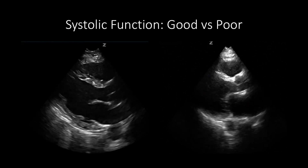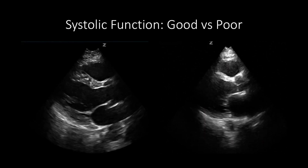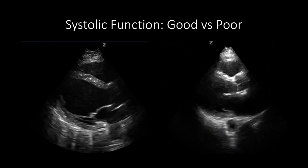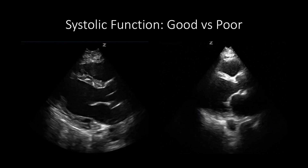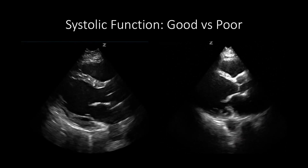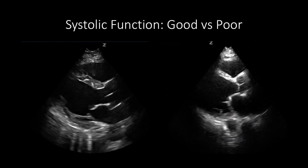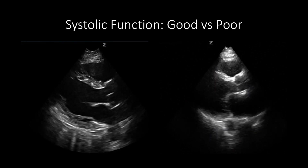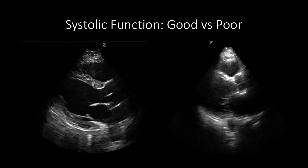Even though the systolic function can appear normal, the patient can still have acute heart failure. 50% of patients that have acute heart failure have normal systolic function. These patients are classified as having heart failure with preserved ejection fraction, which we will discuss identifying later.